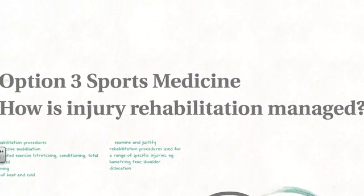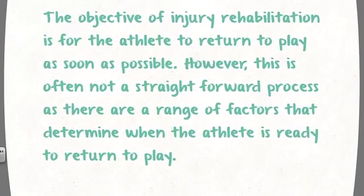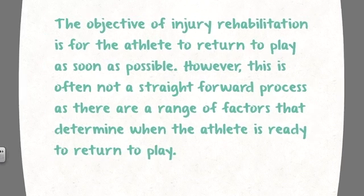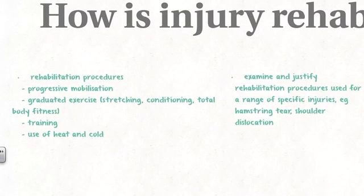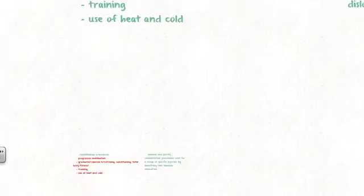This is Option 3, Sports Medicine. How is injury rehabilitation managed? The objective of injury rehabilitation is for the athlete to return to play as quickly as possible after the injury. However, this is often not a straightforward process as there are a range of factors that determine when the athlete is ready to play. One of these factors is the rehabilitation procedures and how well they are implemented, and those procedures are the four dash points for this particular syllabus point.